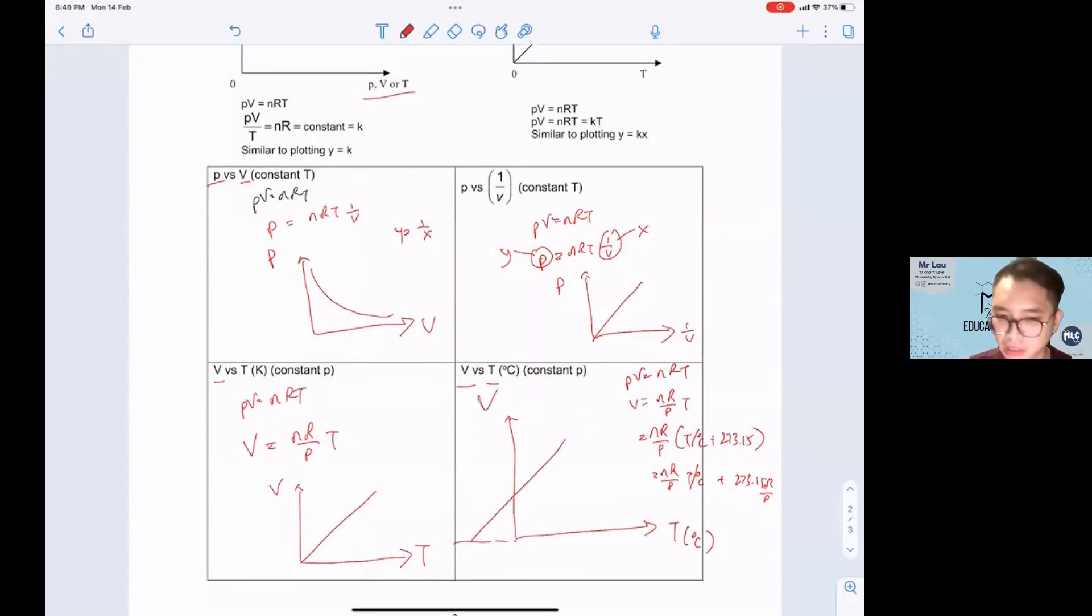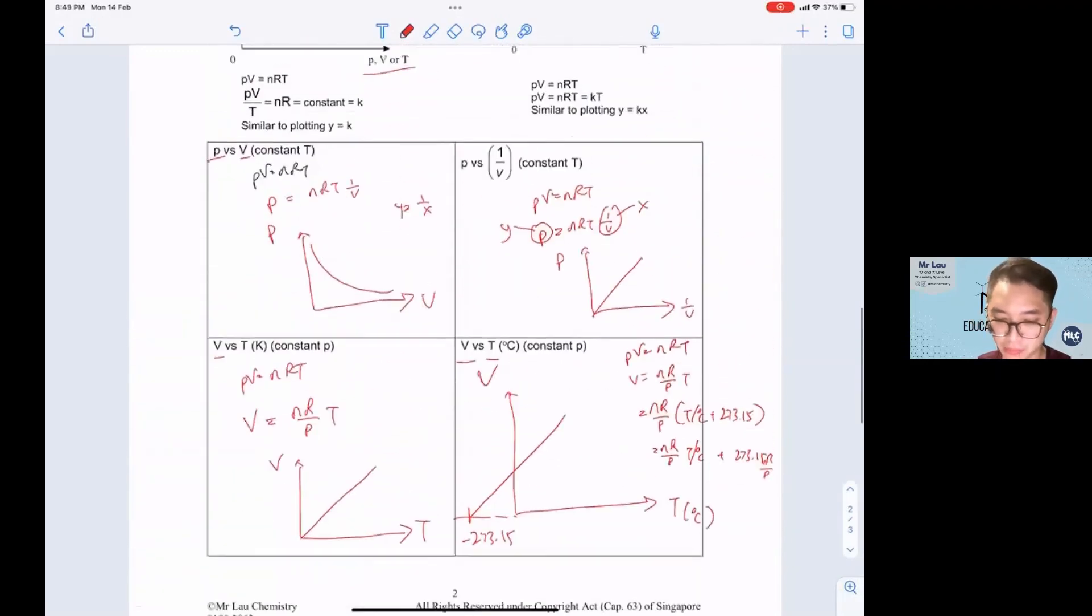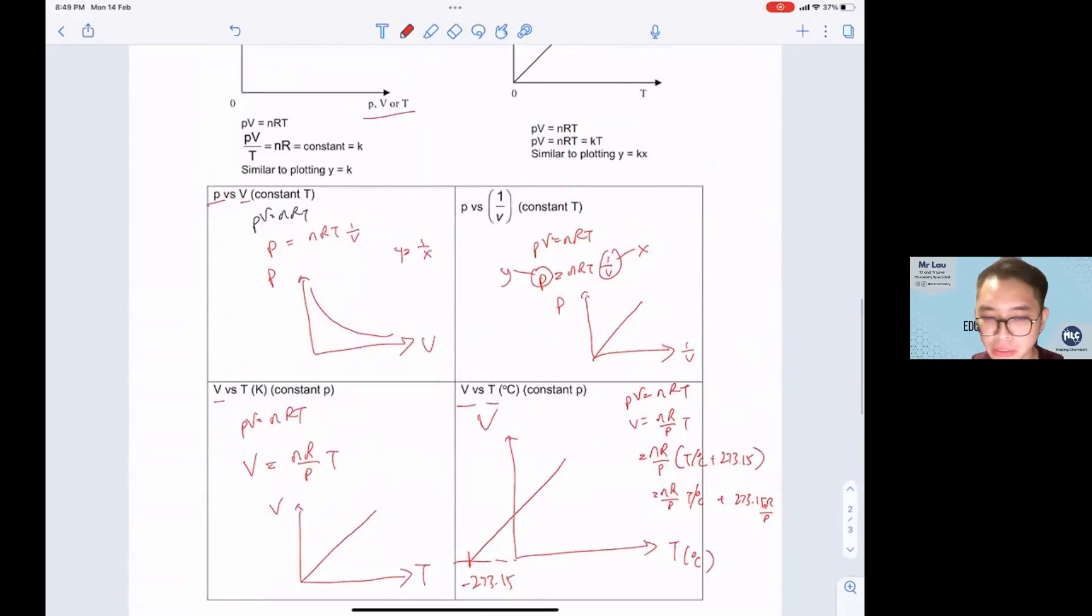Where you have V against T in terms of degrees Celsius. When V is 0, this will be minus 273.15. So this is how you sketch graphs for the Gas State chapter. See you next time.